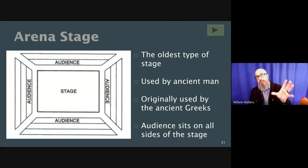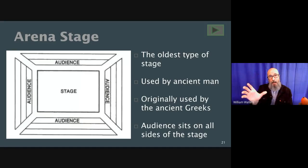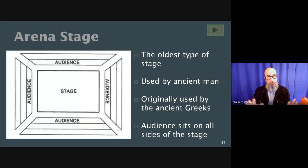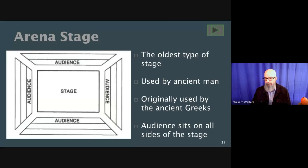I would put 'types of stages' on the left-hand side and then over on the right-hand side, the first type: arena stage — the audience sits on all sides of the stage. Set up your Cornell notes however you like, but that's how I would do it.